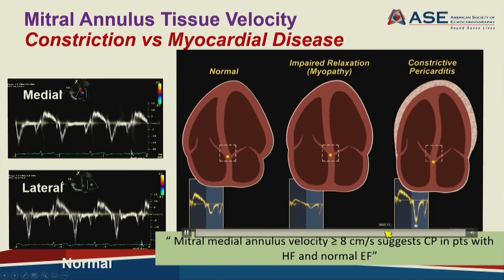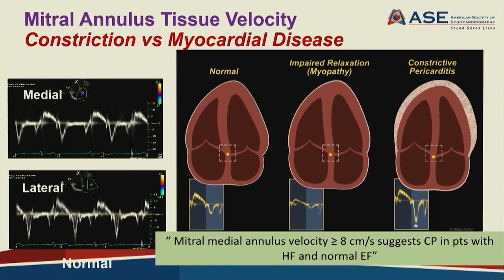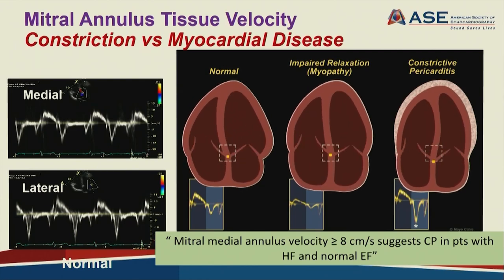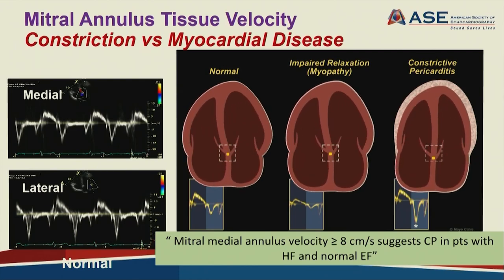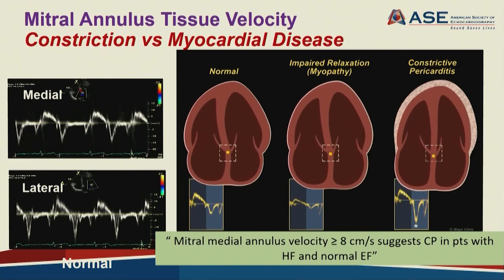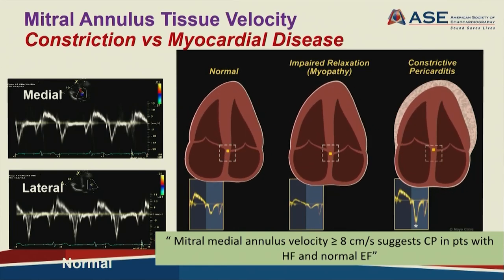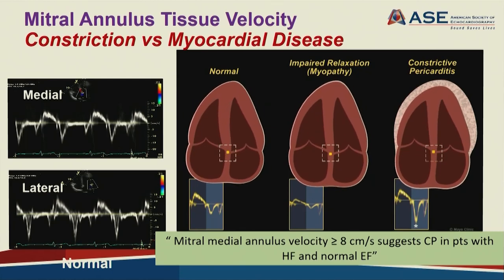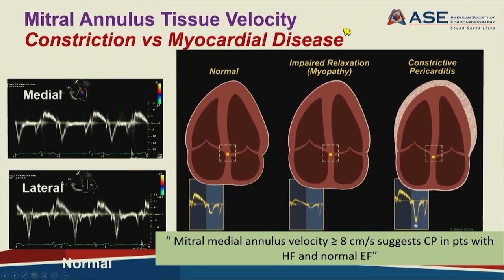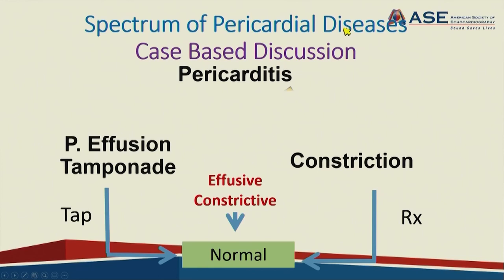The key takeaway is that a patient with heart failure with normal ejection fraction, clinical signs of jugular venous pressure elevation, and medial E-prime velocity of 8 cm/s or greater most likely has constrictive pericarditis—a relatively easy way to diagnose constriction in clinical practice. We will now review a few cases illustrating multimodality imaging across the spectrum of pericardial disease: pericarditis, effusion/tamponade, and constriction.